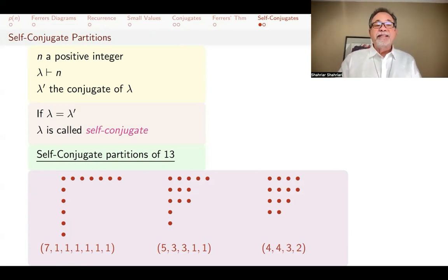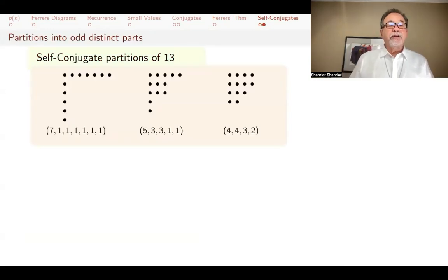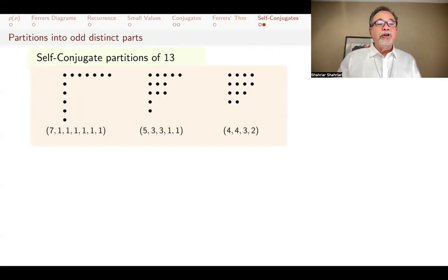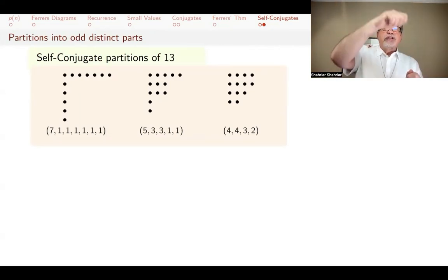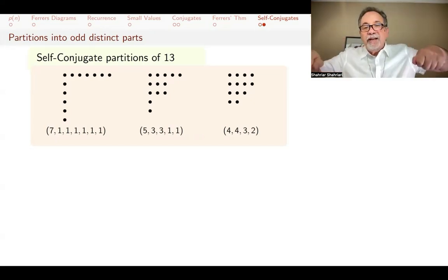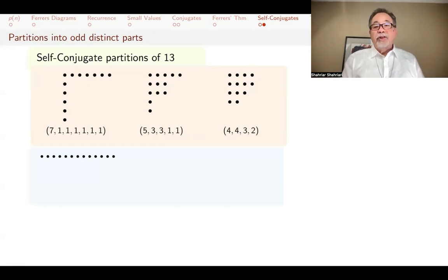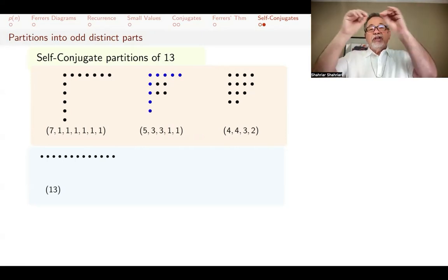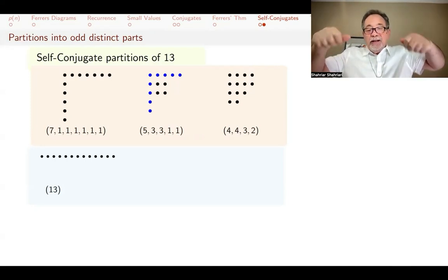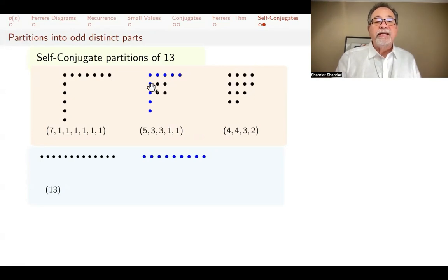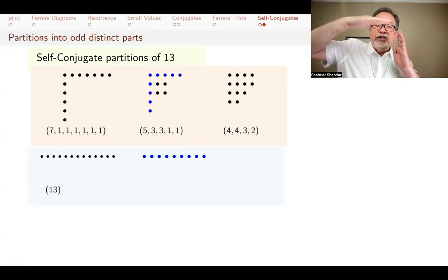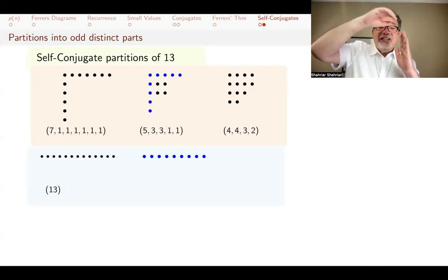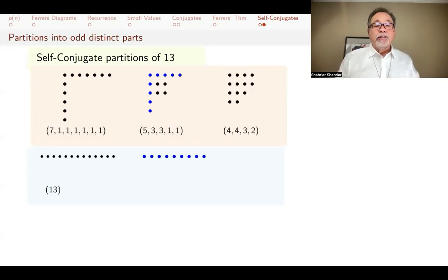What can we say about these self-conjugate partitions of 13? Here's what I'll do: take the first one and look at the long series of dots going up and then across — the outermost L-shaped layer. Straighten it out into one row, and you get 13 things: the partition into one part of 13. For the second one, take the top row and first column, straighten them out. You get four things on one side, four on the other, plus the shared corner: nine things. It's always odd because the row and column share one dot, so the count is twice something plus one.